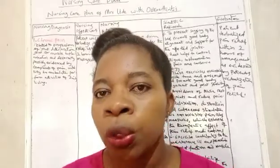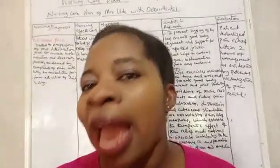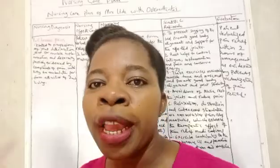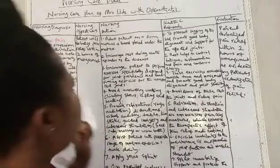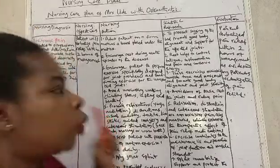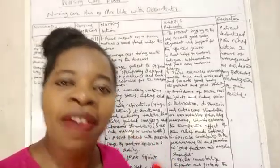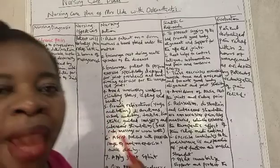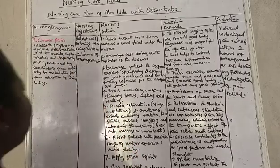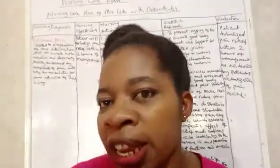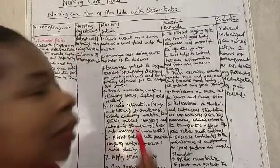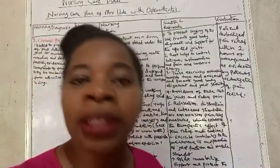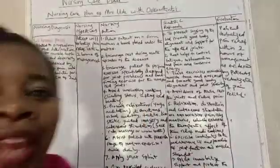For the nursing care plan of Mrs. Ode who has osteoarthritis, our number one diagnosis is: chronic pain related to progression of cartilage deterioration, joint or muscle inflammation and deformity, possibly evidenced by complaints of pain, inability to ambulate and perform activities of daily living. The objective is: patient will verbalize pain relief within two hours of management.